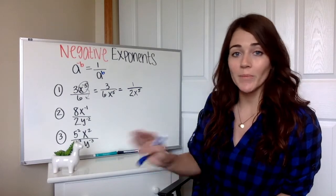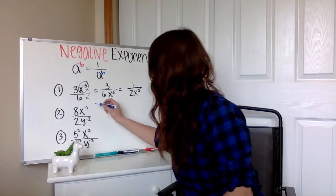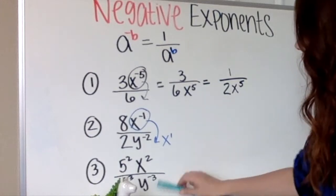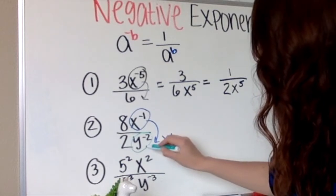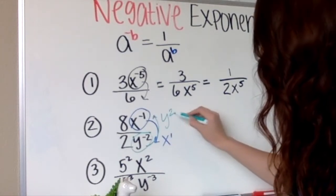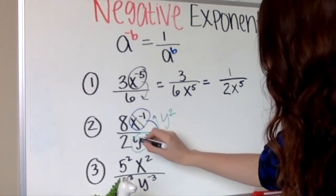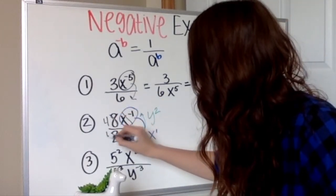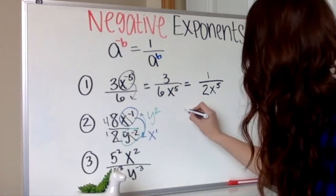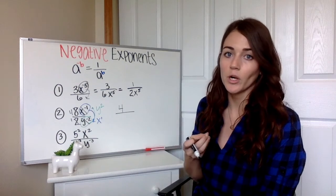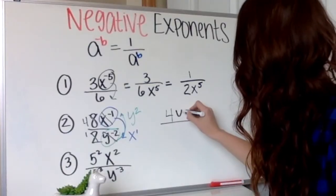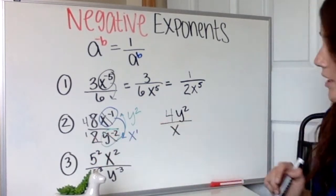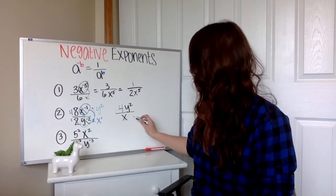Number 2: I'm going to start by moving my negative exponents. This x to the negative 1 is on top, so I move it to the bottom to become x to the first down there. And my y to the negative 2 is on the bottom, so to get rid of the negative exponent, I move it to the top — so y squared goes up there. Now, 8 over 2 can also be simplified: divide both by 2 to get 4 over 1. So we have 4y squared over x. Anything to the first is just itself, so that's our simplified version of number 2.